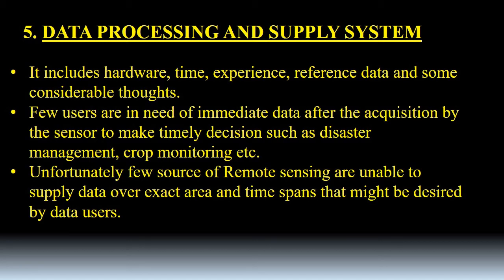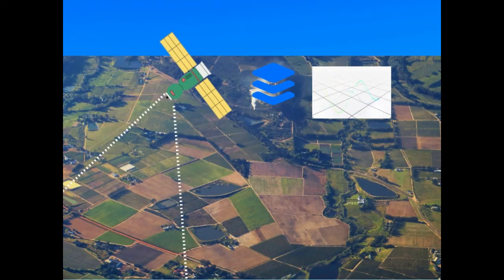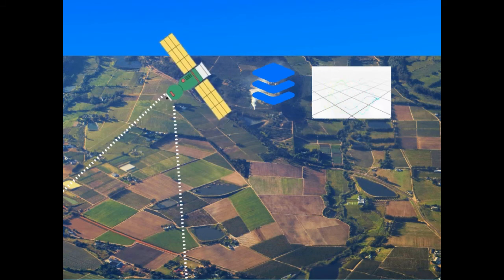A few sources of remote sensing are unable to supply data over the exact area and time spans that might be desired by data users. This is also a small example. For the beginners who are learning, who are hearing for the first time, for those people I attached this image. Here the satellite is taking images and the data will be overlaid in processes like that.